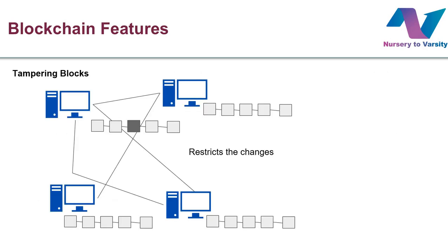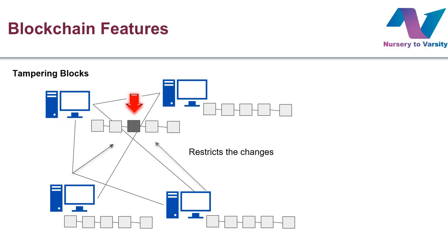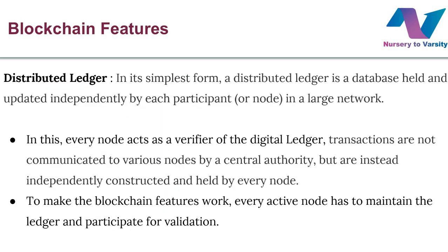Suppose these are four blockchains and a fraud tries to tamper one node — shown here as the gray block. The system will check the data from the other blockchains, since blocks are distributed across the network with millions of copies. It checks the other nodes and finds no change in their data, so it will not allow the tamper. This is how tampering of blocks is restricted.